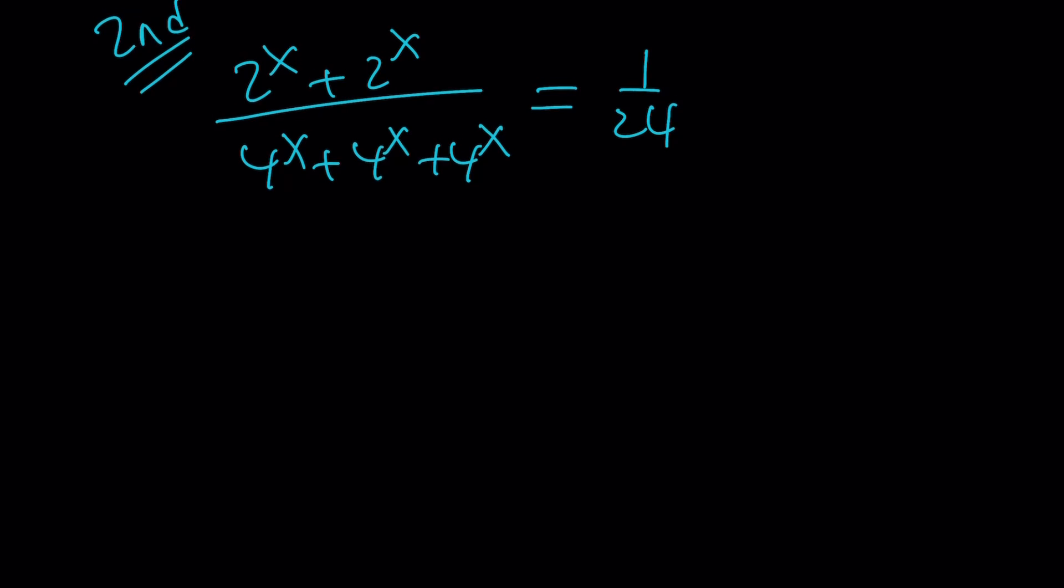Now. Here's what we're going to do. We're going to write the 2^x + 2^x as—what am I talking about? Sorry. It's a little past midnight. So that's normal. So 2^x + 2^x is 2 × 2^x. And 4^x written 3 times, that's 3 × 4^x. And that's equal to 1/24.